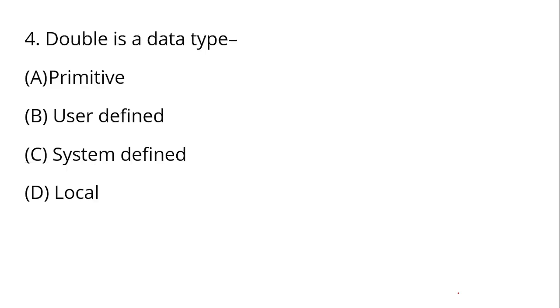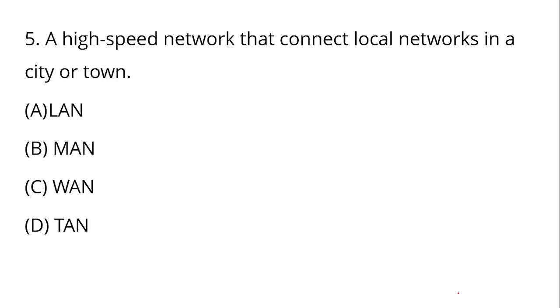Next: Double is a data type — what kind of data type is Double? Double is a Primitive Data Type. Option A is your right answer — Double is a Primitive Data Type.